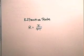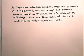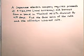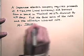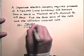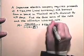Now let's define the effective rate and do an exercise in which we calculate it. The effective rate is the interest rate calculated based on the actual amount received by the borrower. The effective rate formula is: rate equals interest divided by principal times time. A Japanese electric company requires proceeds of $720,000 in local currency and borrows from a bank in Thailand at 12% discount for 45 days. Find the face value of the note and the effective interest rate. The face value of the note is $720,000 divided by 1 minus 12% times 45 over 360, which gives us a face value of $730,964.47.